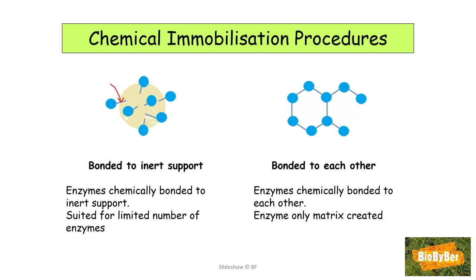When the enzymes are chemically bonded to an inert support, they are bonded by covalent bonds. However, this is only suited for a limited number of enzymes because the chemical structure of the enzymes doesn't lend itself to chemical bonding to the inert support. An alternative approach is to bond the enzymes to each other. When the enzymes are bonded to each other by chemical bonds, there is no need for a second substance, so you create an enzyme-only matrix.